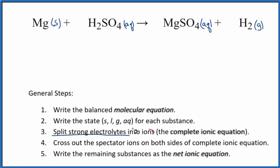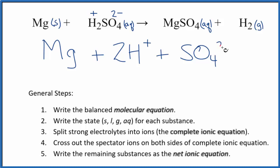Now we have our states and can split the strong electrolytes into their ions for the complete ionic equation. We don't split solids apart in net ionic equations, so that's just Mg. Hydrogen is in group one so that's one plus. The sulfate ion is two minus. We have two hydrogen ions, so that's 2H+, and then we have the sulfate ion SO4 2-. Those are the reactants.